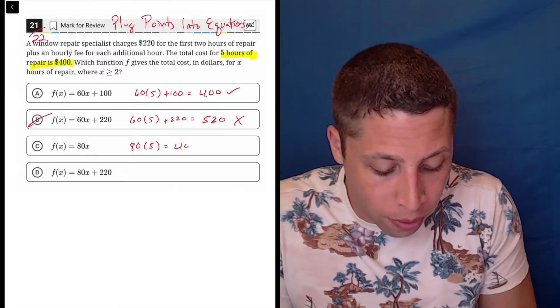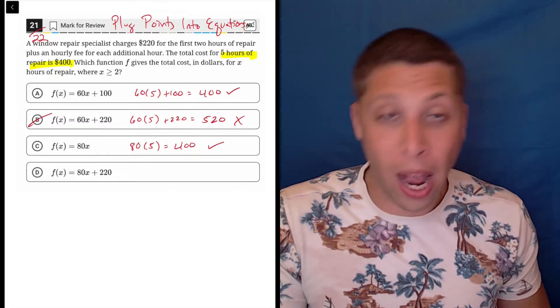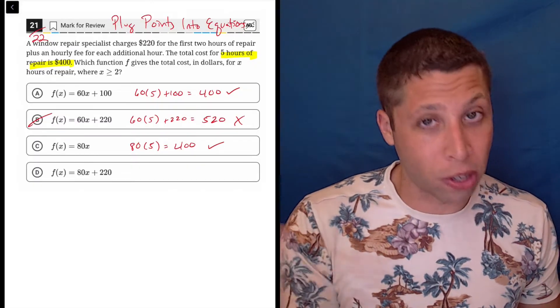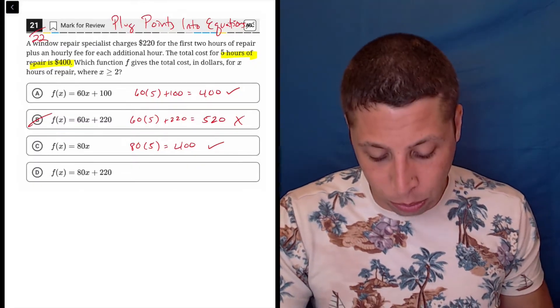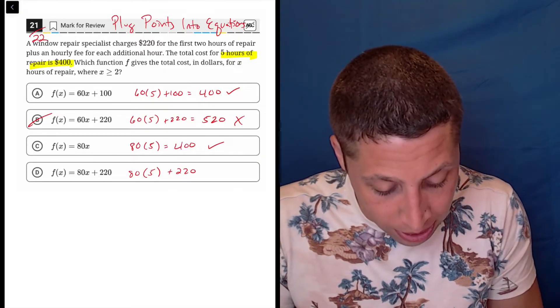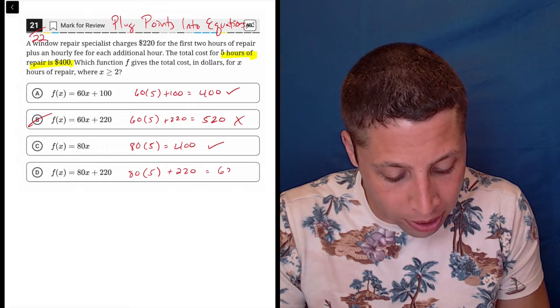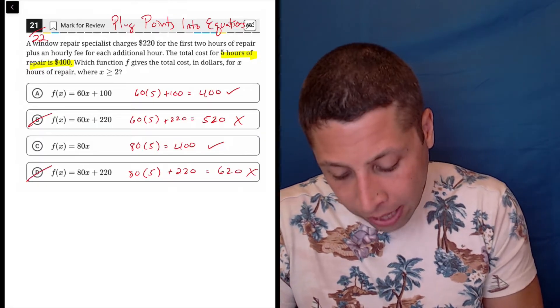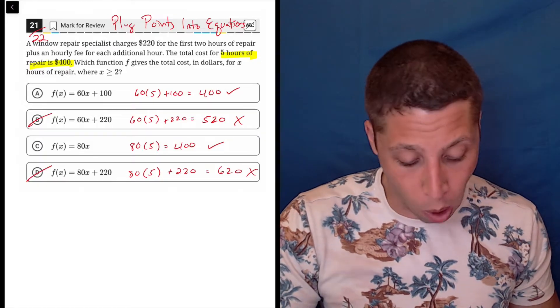80 times five though, well, that is 400. So that works too. I expected this. This is the second to last question. So it wasn't going to be that easy, but that's okay because now we can still eliminate choice D because 400 plus 220 is 620. So that's right away two choices that are wrong.